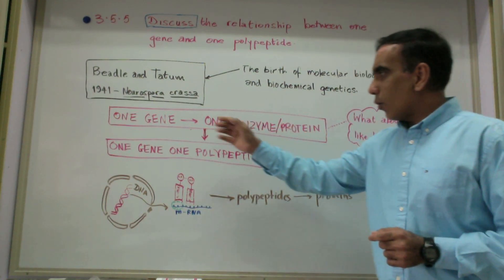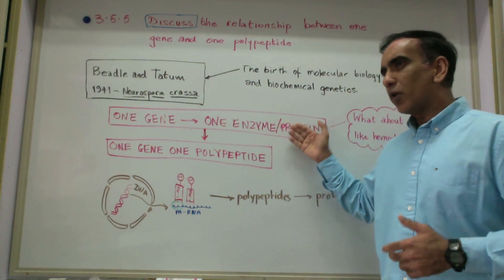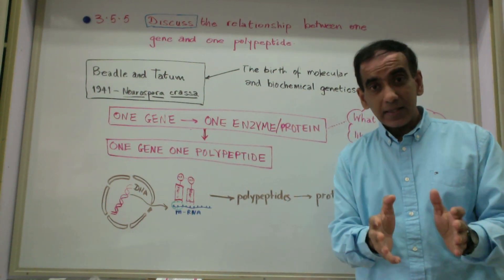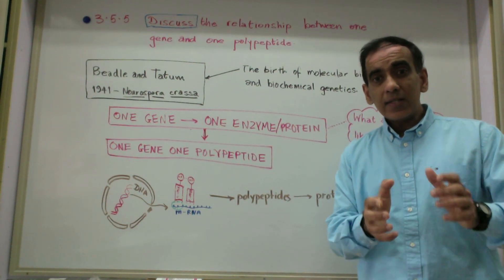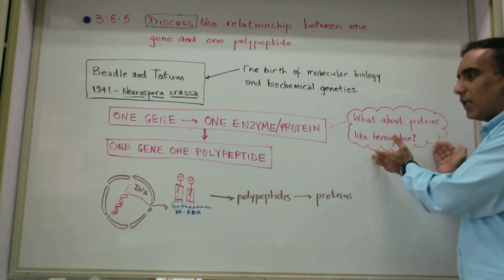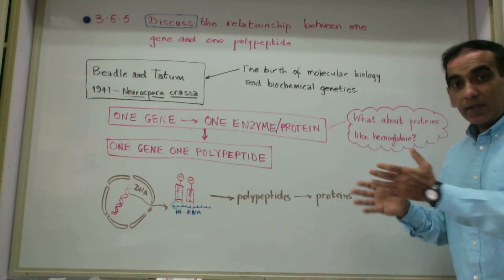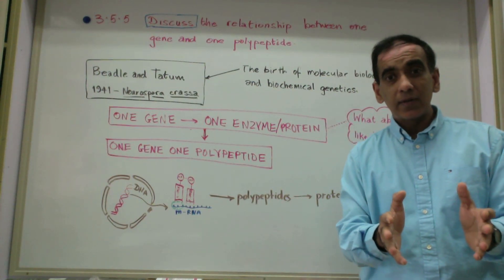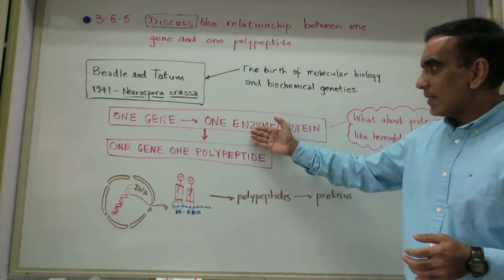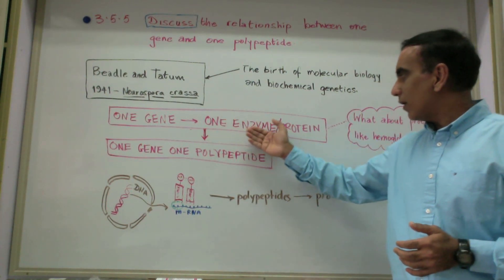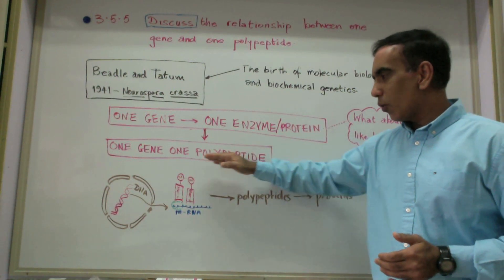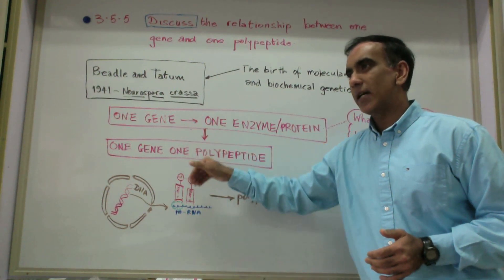Soon after the one gene one enzyme or one protein hypothesis was proposed, biologists realized that this hypothesis would not explain proteins like hemoglobin, which is made up of an aggregation — a coming together — of four polypeptide chains. In time, the one gene one protein hypothesis gave way to the one gene one polypeptide hypothesis.